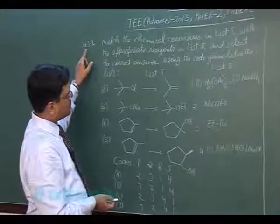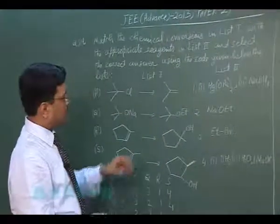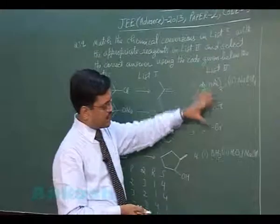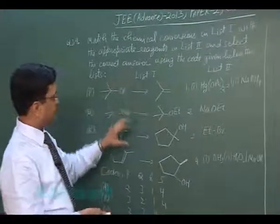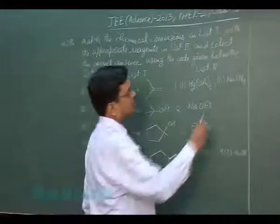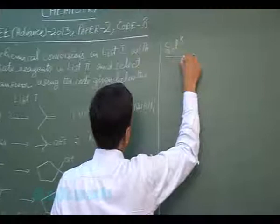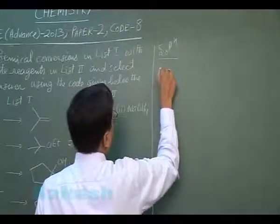This is question 39. Here two lists are given, list 1 and list 2. In list 2 reagents are present and in list 1 conversion is present. So we see the solution of this question for P.